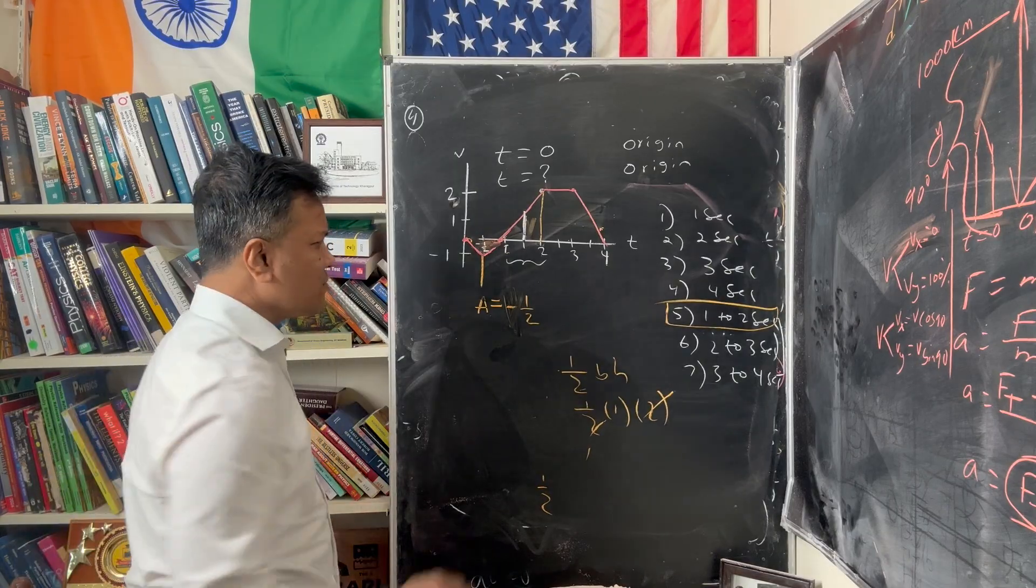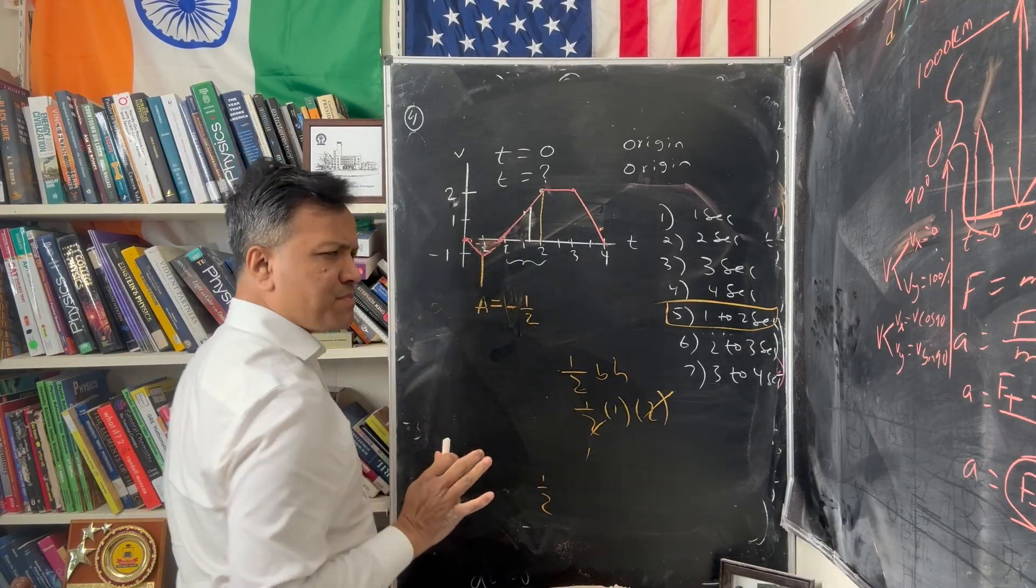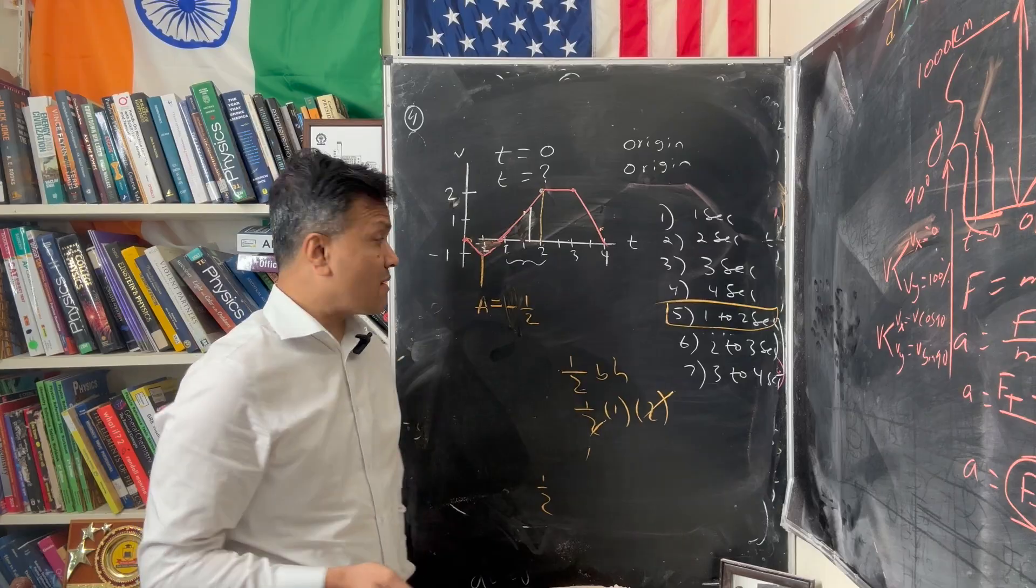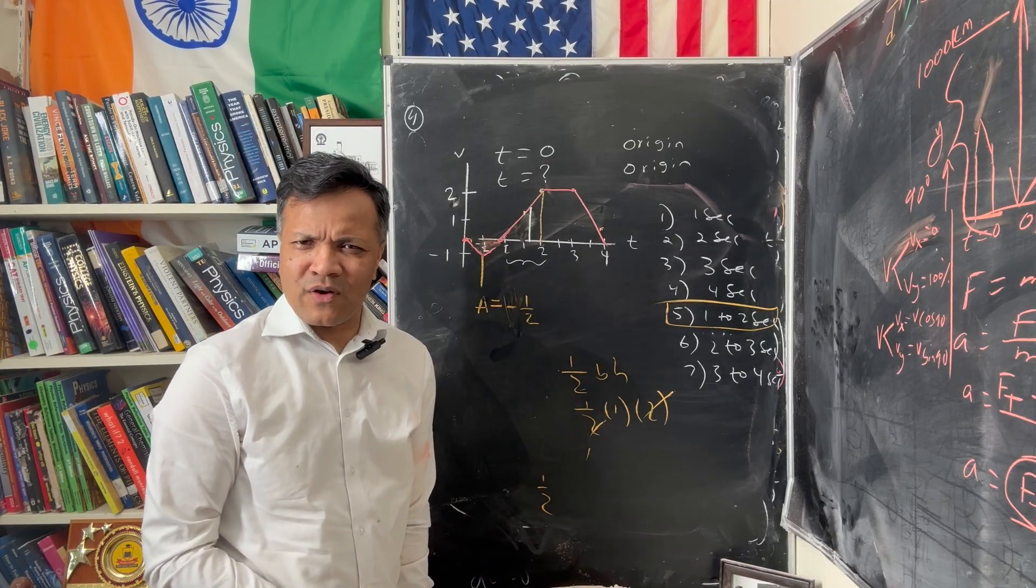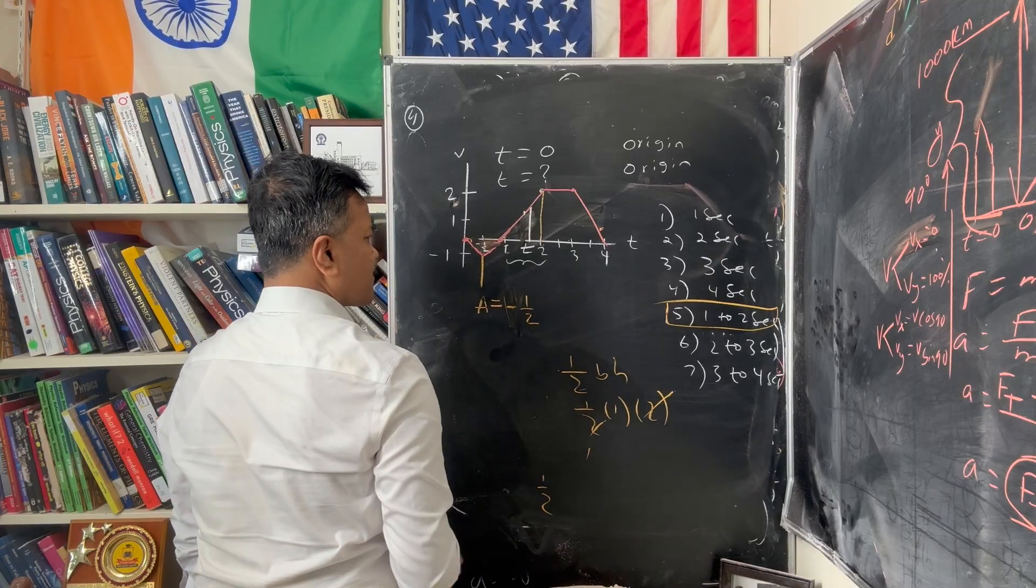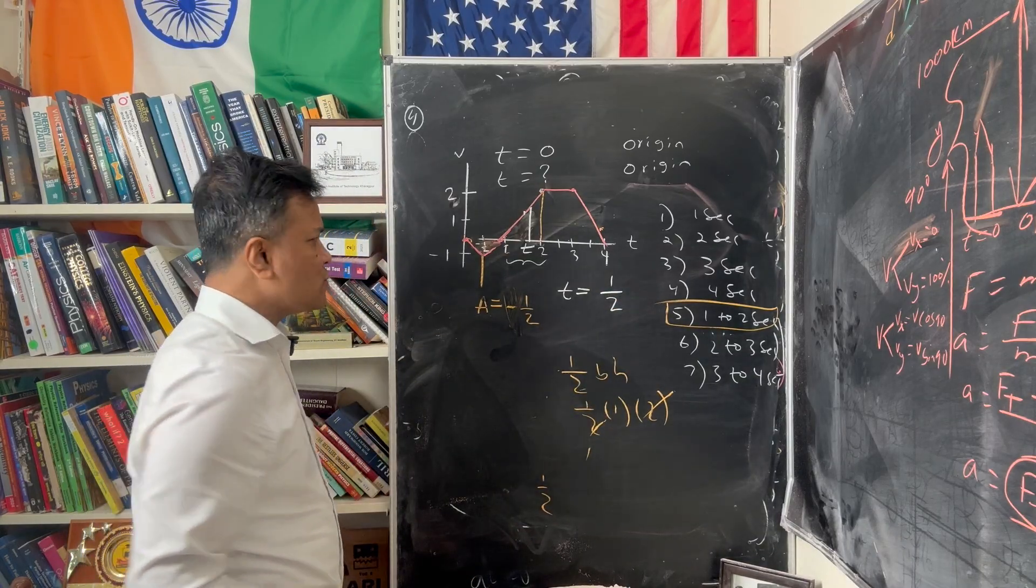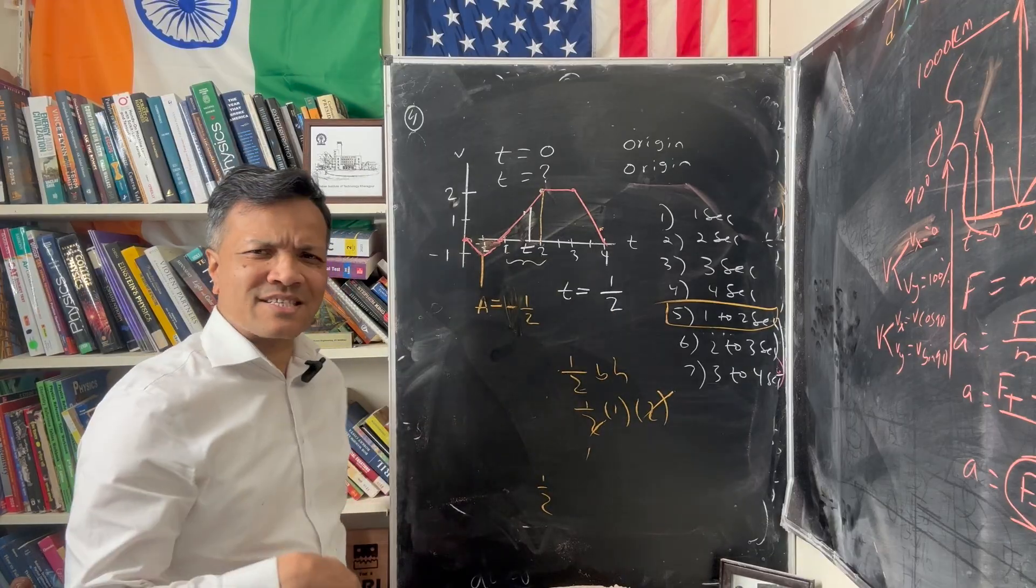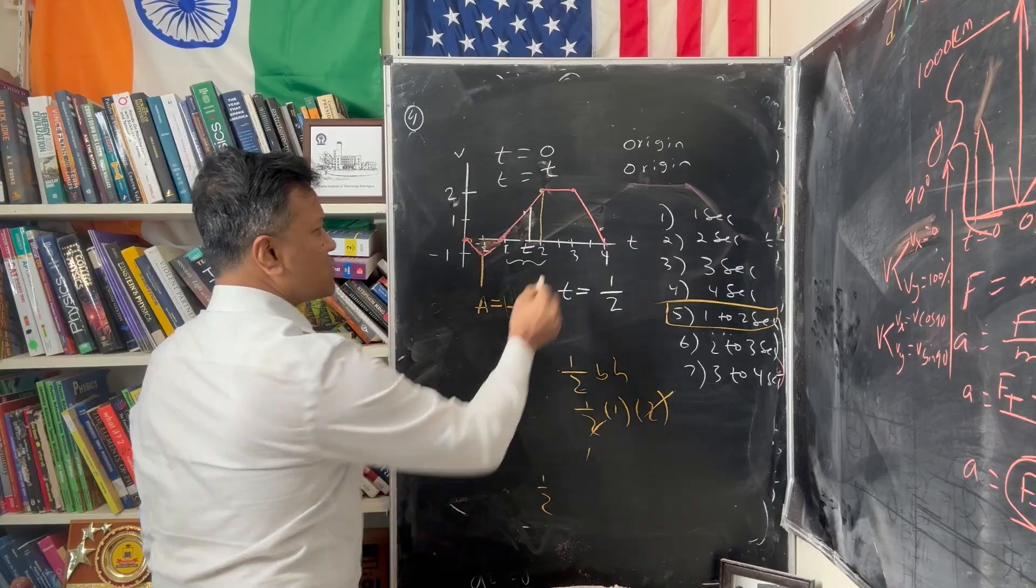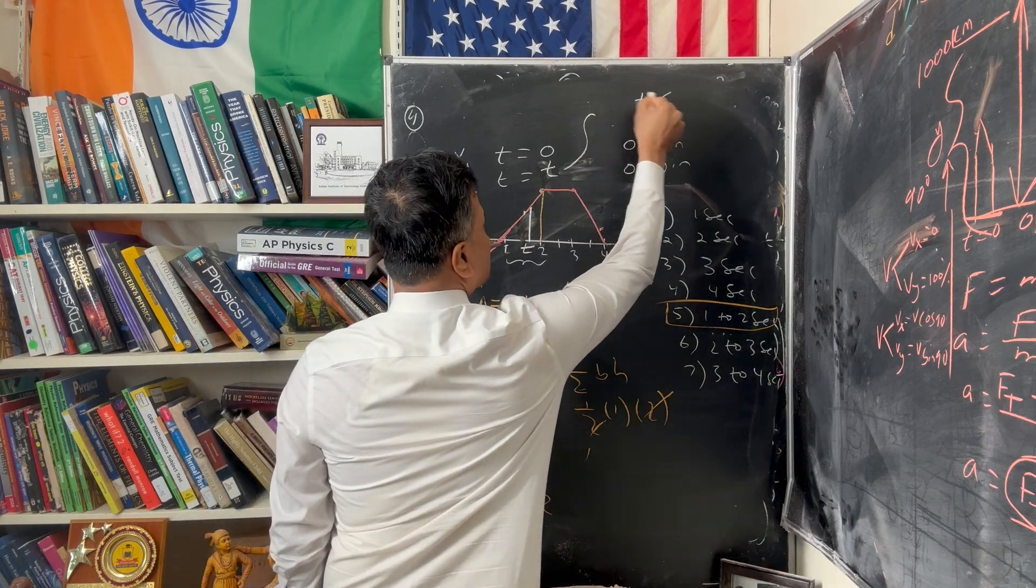Not 1.5 exactly, I don't want to mislead you. This is 1.5. It lies between 1 to 2, between 1 second to 2 seconds. At time t, there must be an area which is positive half. So negative half and positive half cancel, the object is back to origin. So we're going to find that t, and that t lies between 1 to 2 seconds.